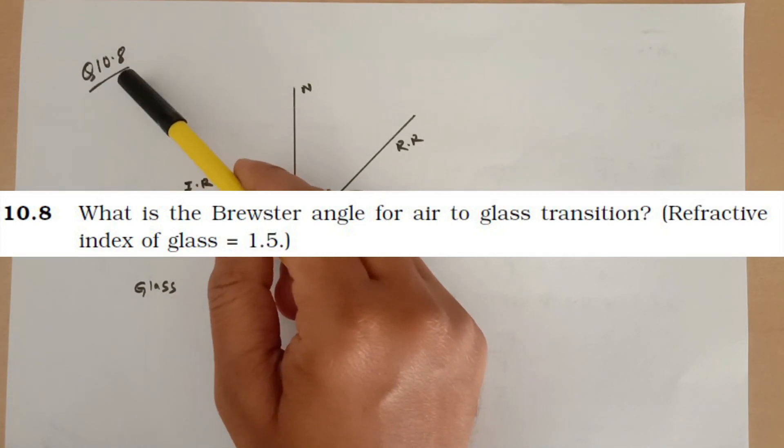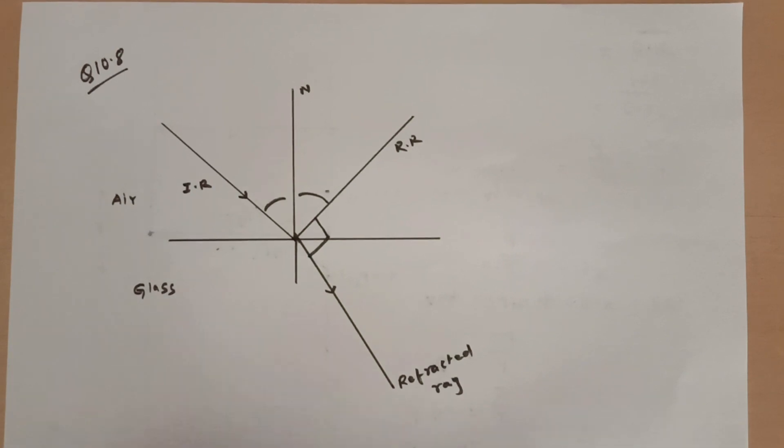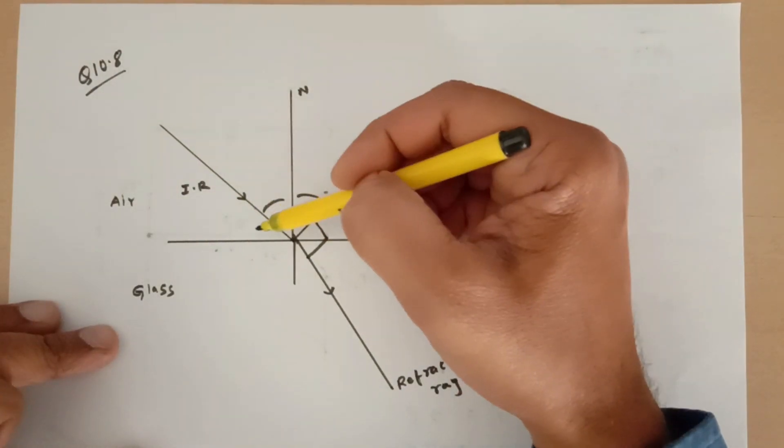We are discussing problem number 10.8, grade 12 wave optics chapter. This is a pretty easy problem. It is a question related to Brewster's law. Basically, this is a ray of light which is coming from air and it is going inside glass.